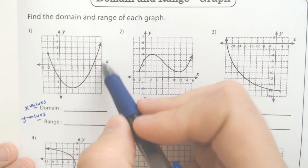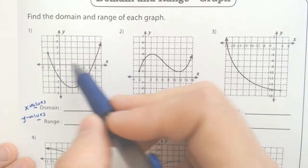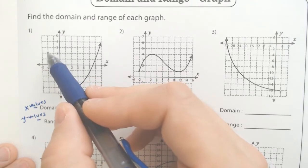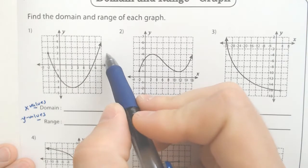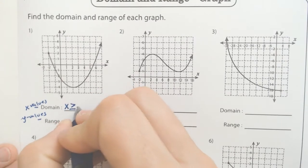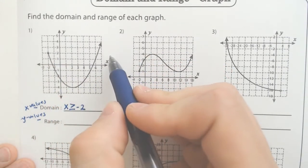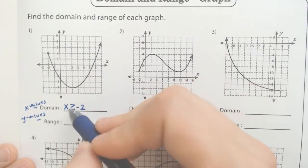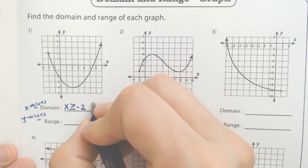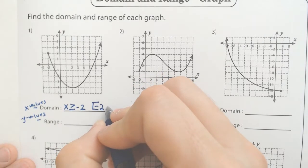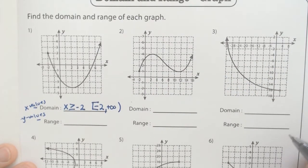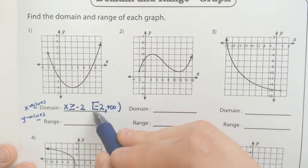In this case the domain, which is the x values or the left and right values, starts at negative 2 because that is the x value in which this graph begins. Then it goes to the right to positive values and to infinity because of this arrow. You can write x is greater than or equal to negative 2. You could also write with a bracket negative 2 comma positive infinity and then a parentheses around the positive infinity because you can never actually equal positive infinity but you can equal the negative 2 which is why it has the bracket.